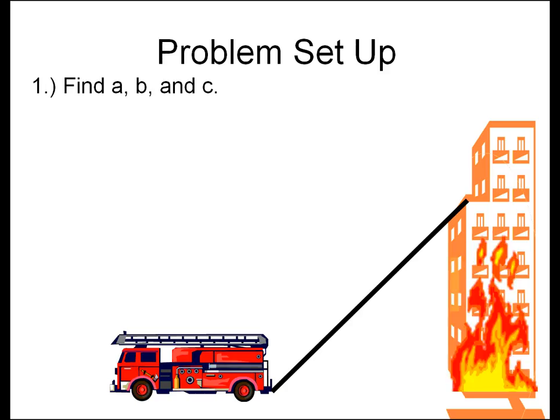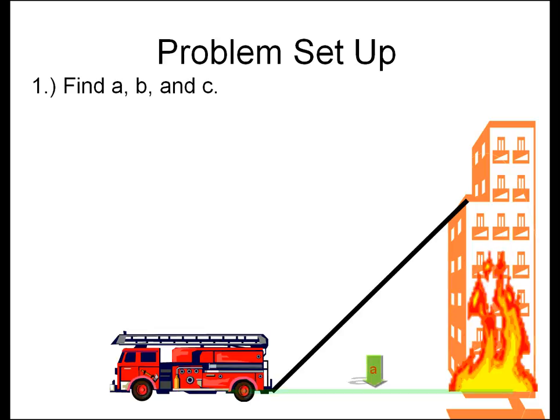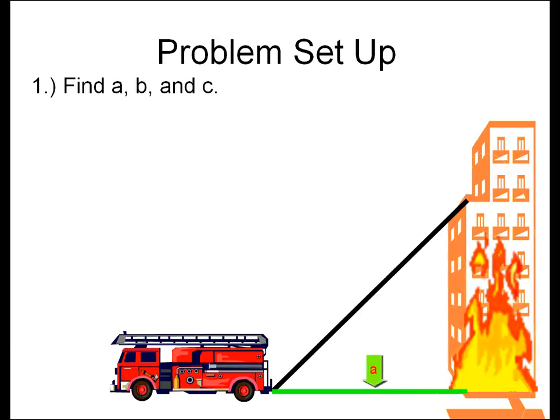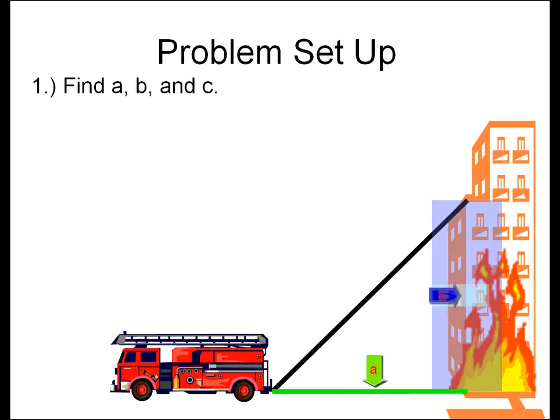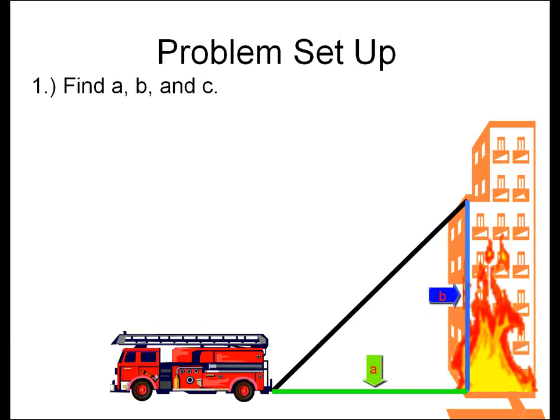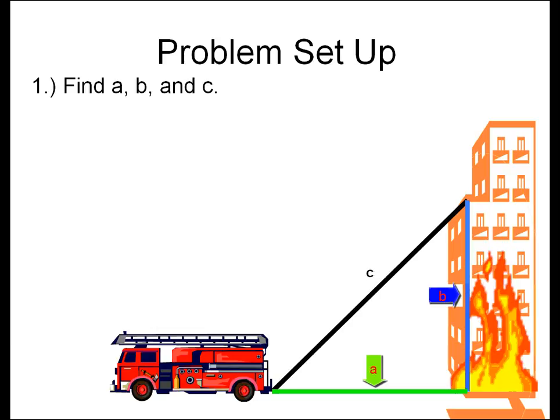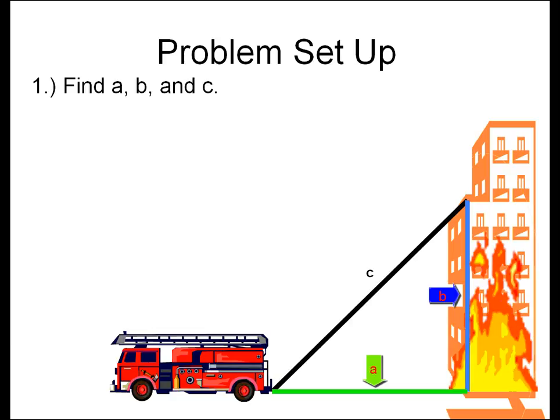Setting up our problem. First we have to find A, B, and C. A will be the distance between the fire truck and the base of the building. B will be the distance between the base of the building and the seventh floor window. C, our hypotenuse, will be the length of our ladder.